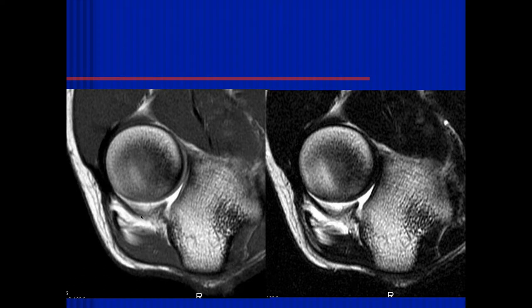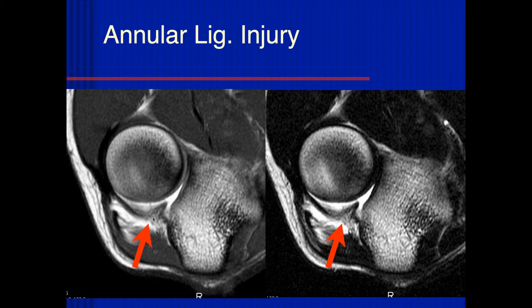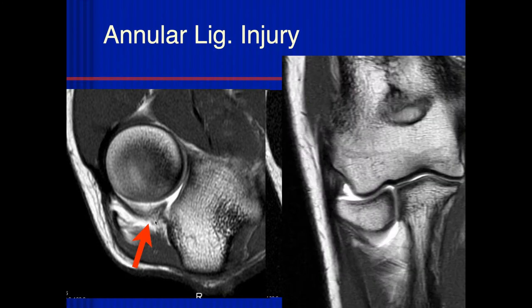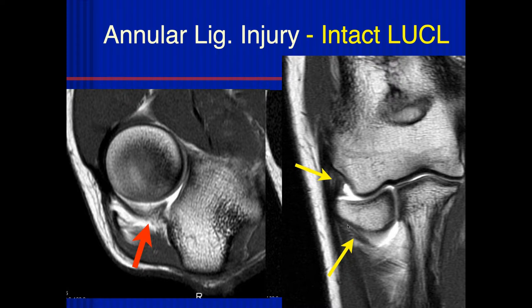The annular ligament is at the head of the radial head. The lateral ulnar collateral ligament originates a little more distally on the ulna, comes up over the annular ligament, and attaches more distally on the radius. The annular ligament attaches right here; the lateral ulnar collateral ligament attaches just a little bit more proximally at the supinator crest where both attach. Here's a patient with elbow trauma showing disruption of the annular ligament complex, also extending to the origin of the lateral ulnar collateral ligament.